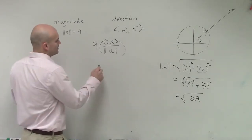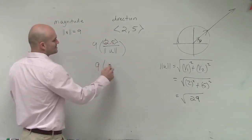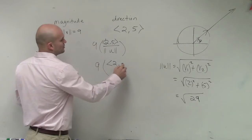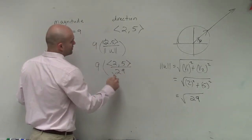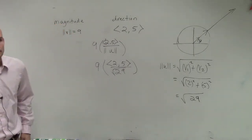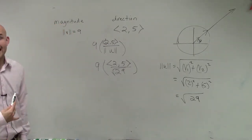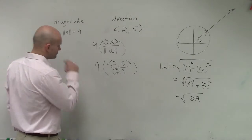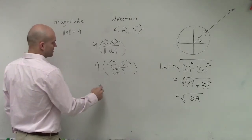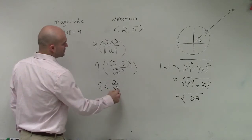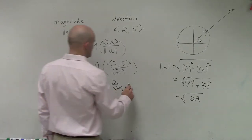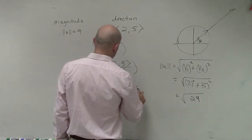So therefore, we have 9 times 2 comma 5 all over the square root of 29, which I can now break up into a vector of 9 times 2 over the square root of 29 comma 5 over the square root of 29.